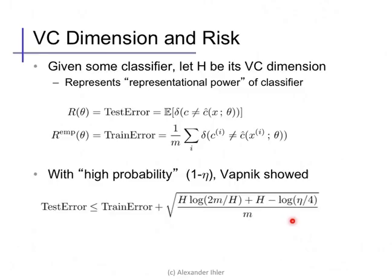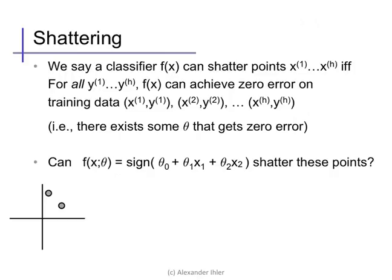We say a classifier f of x can shatter a collection of points x1 to xh if, for every possible target label for those h points, our model f of x can achieve zero training error on that collection of labeled data. In other words, however we assign the labels, there's some value of the parameters of the model that can achieve that labeling.